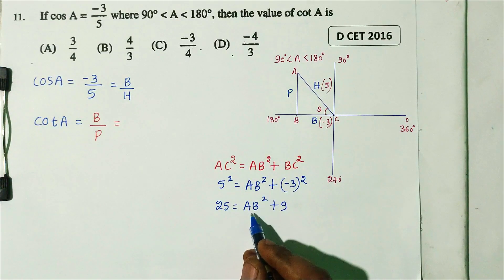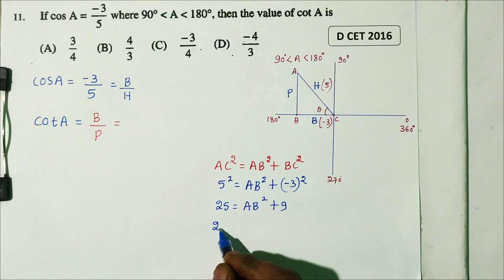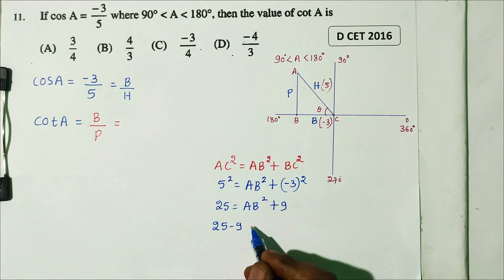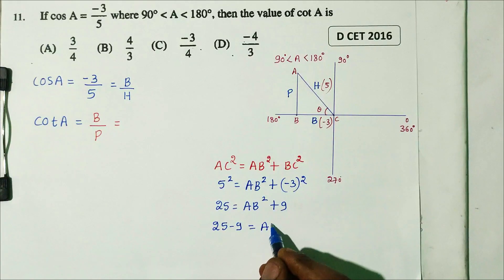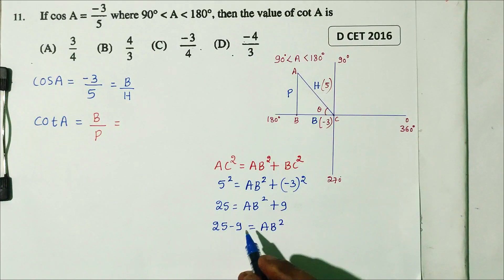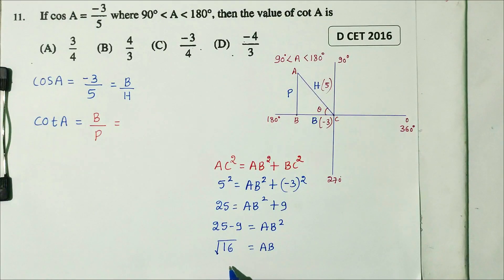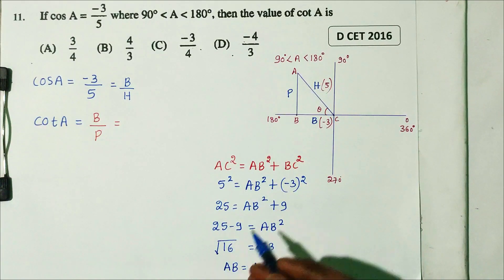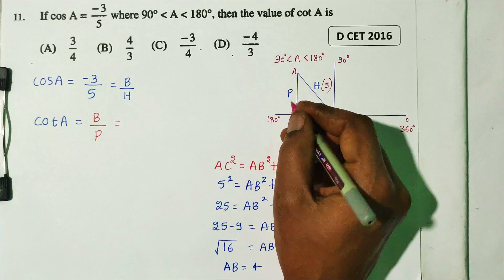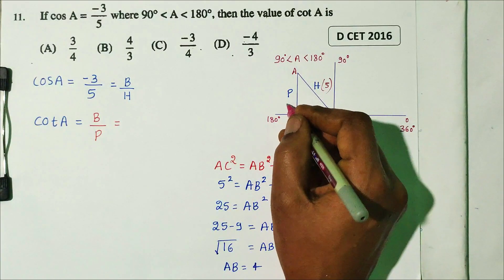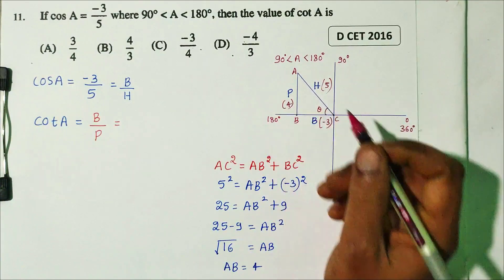So 25 equals AB² plus 9. Therefore AB² equals 25 minus 9, which equals 16. Taking square root on both sides, AB equals 4. So the perpendicular is 4.